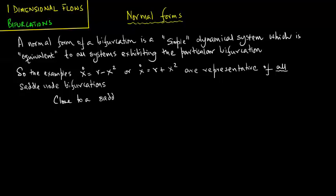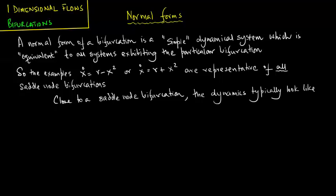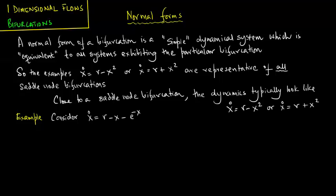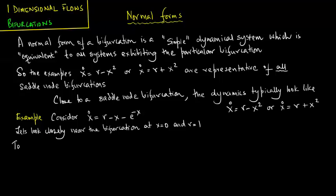Close to a saddle node bifurcation, the dynamics typically look like x_dot = r - x² or x_dot = r + x². Consider the example x_dot = r - x - e^(-x), and let us look closely near the bifurcation at x = 0 and r = 1.